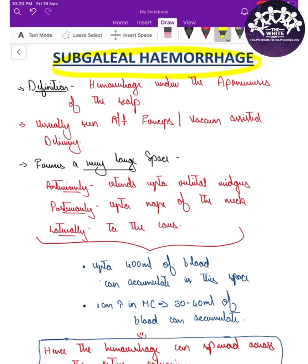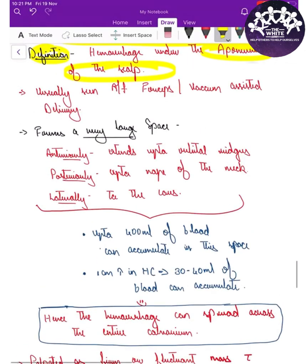Coming to the definition, it is hemorrhage under the aponeurosis of the scalp. There are various layers of the scalp, and accumulation of blood in the sub-aponeurotic space — that is, under the aponeurosis — is called subgaleal hemorrhage. It is usually seen after instrumental delivery.